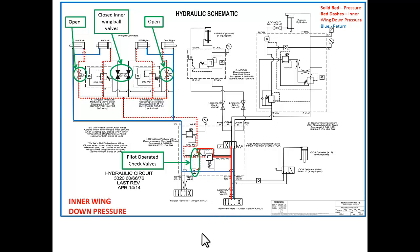There are two pilot operated check valves in the same circuit. The pressure oil goes to the pilot operated check valves on both the pressure and return side. This allows there to be a path for the inner wing cylinders to move in and out and allows it to contour across the field.